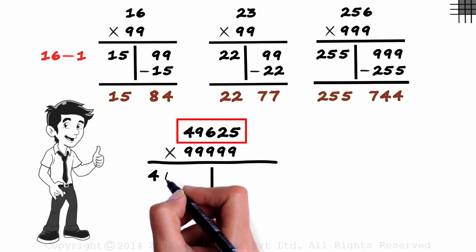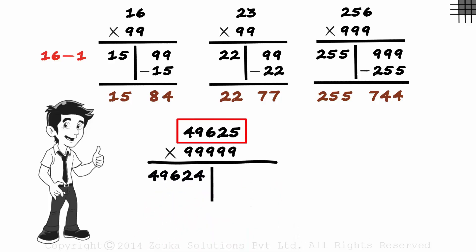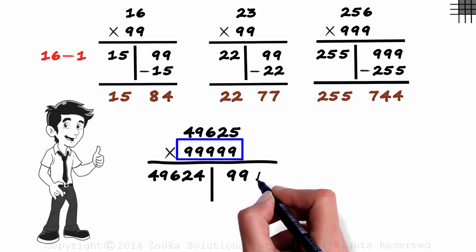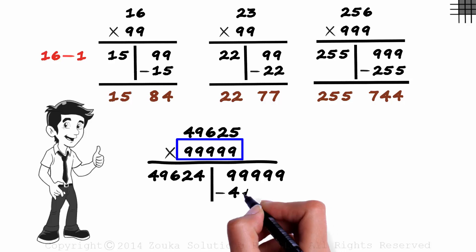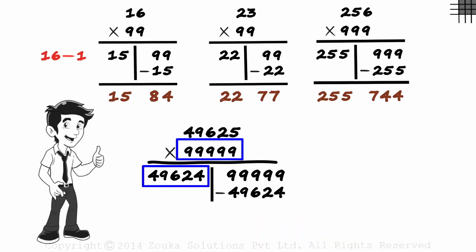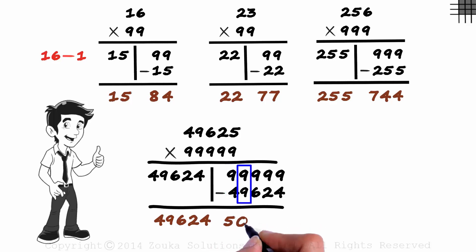Subtracting one from this, we get 49,624. And on the right, we will have 99,999 minus 49,624. Then we get 49,624 down. And then we solve this. Nine minus four is five. Nine minus nine is zero. Nine minus six is three. Nine minus two is seven. And nine minus four is five.